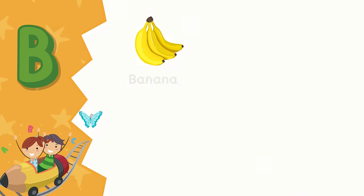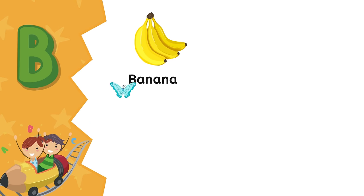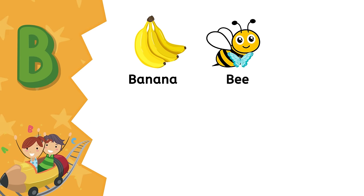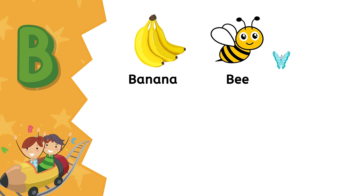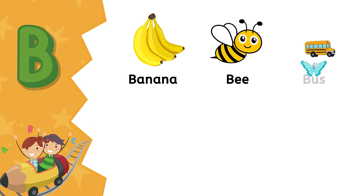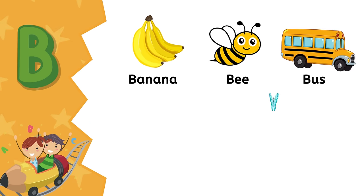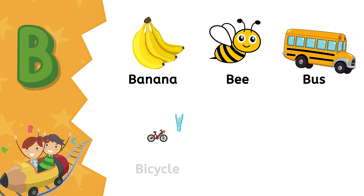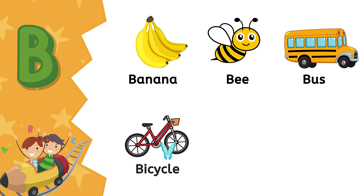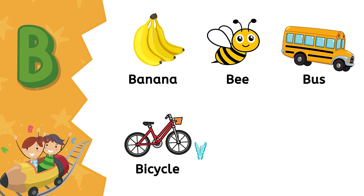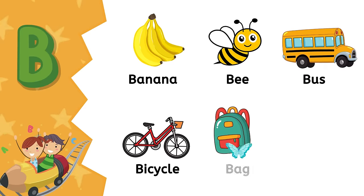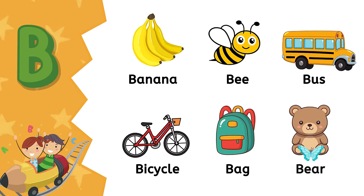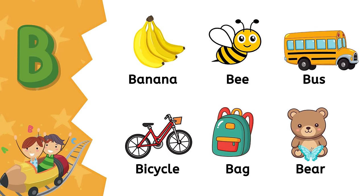B. B is for banana. B is for bee. B is for bus. B is for bicycle. B is for bag. B is for bear.